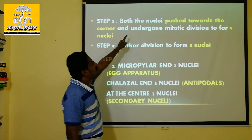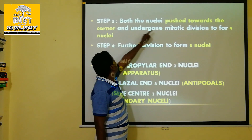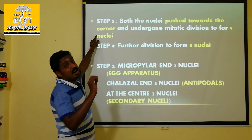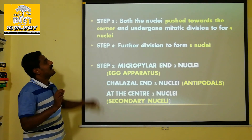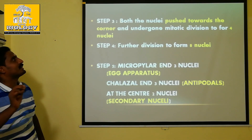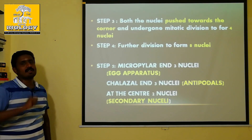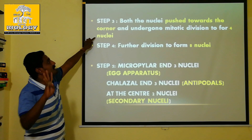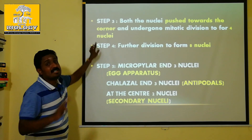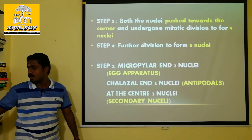Both nuclei are pushed towards the corner, and undergo mitotic division to form four nuclei. Of course, four nuclei are also formed.